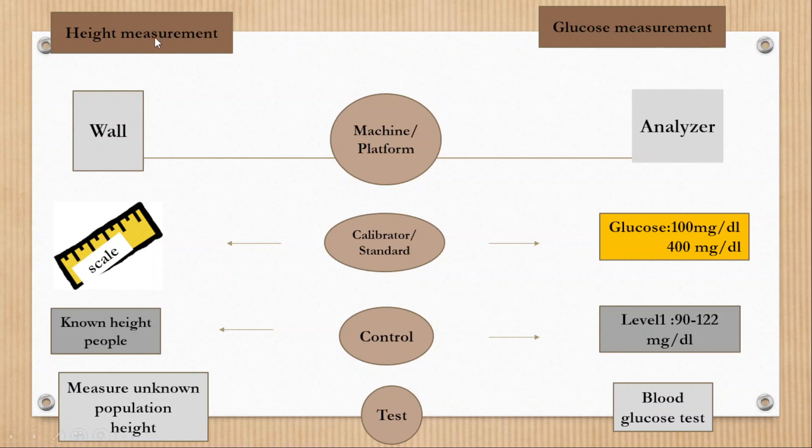In case of height measurement, we can consider this wall as a machine or platform, and for the same function, analyzer is there to measure the glucose. So here wall is a machine for height measurement and here analyzer is a machine for glucose measurement.